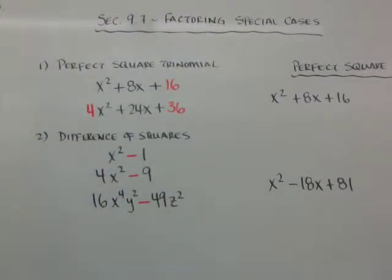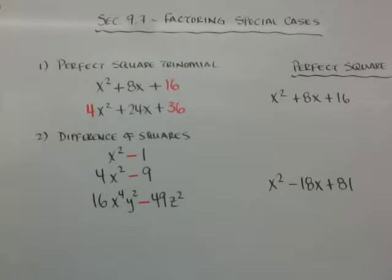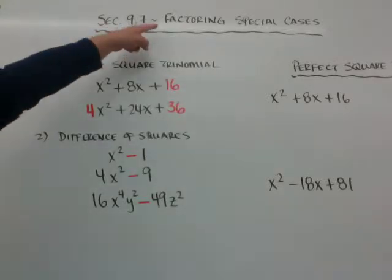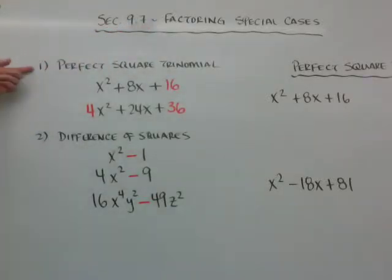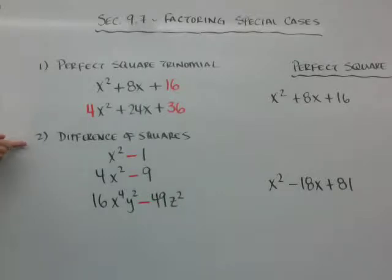This is section 9.7, which is factoring special cases. We hit on special cases earlier in the chapter on how to multiply them. Now we're going to figure out how to factor them. There are two types: perfect square trinomials and difference of squares.